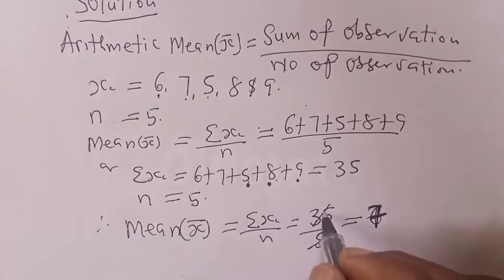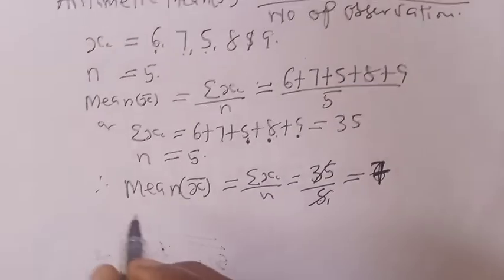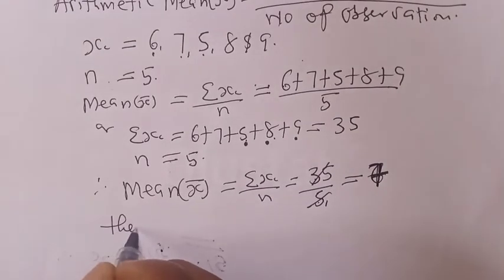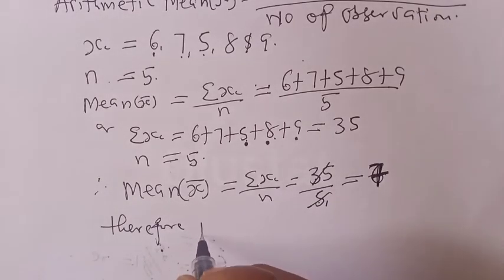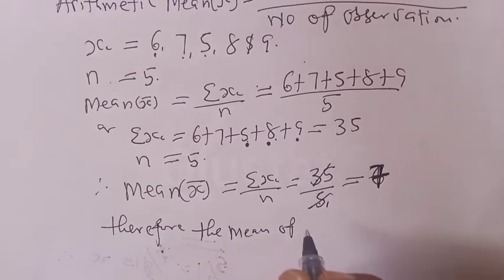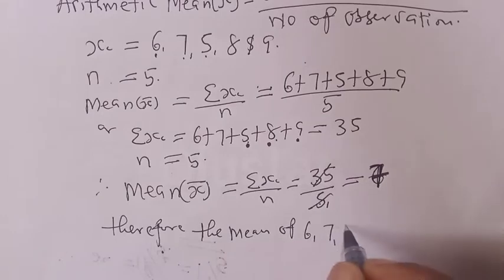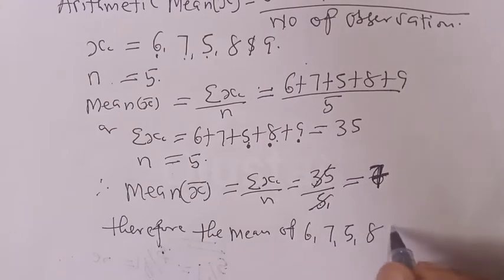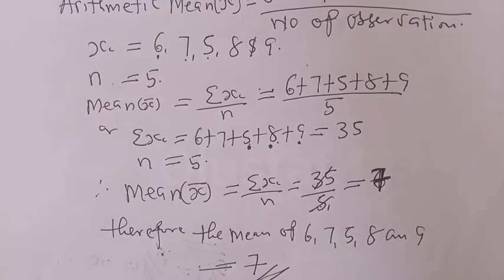5 goes into 35 seven times, that is 7. So the mean of 6, 7, 5, 8, and 9 is equal to 7.